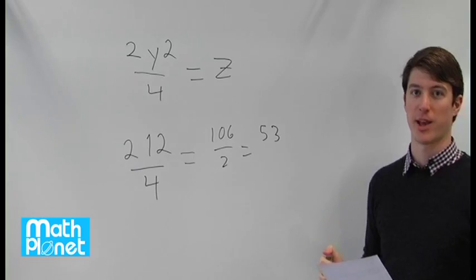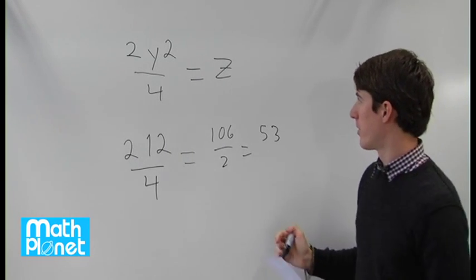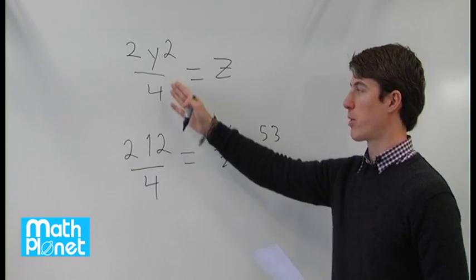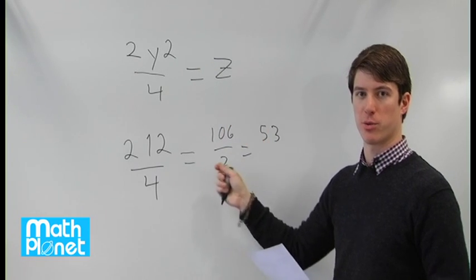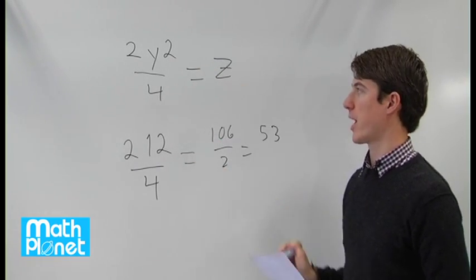So right away we've guessed at the right answer. This is probably the fastest way to solve a problem like this where you're given two variables and you have to guess at which one gives you the outcome that you want.